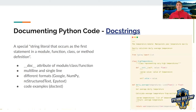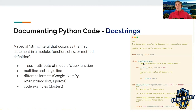The first thing that comes to mind when documenting Python code is docstrings — special string literals that occur as the first statement in a module, function, class, or method definition. You can access them via the `__doc__` attribute of the module, class, or function. They can be multi-line or single-line, and have multiple formats: Google format, NumPy, reStructuredText, or Epytext format. They also support code examples that can be executed with doctest.